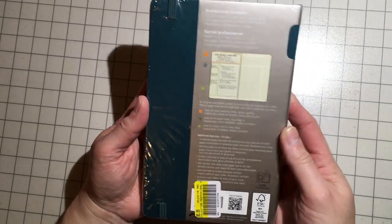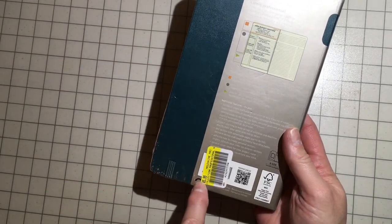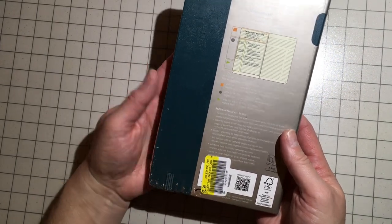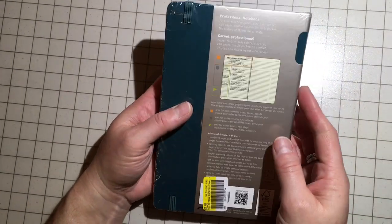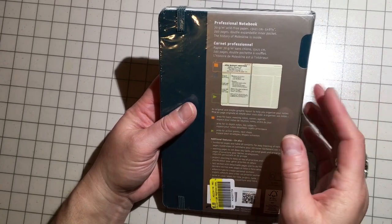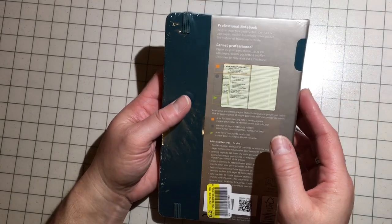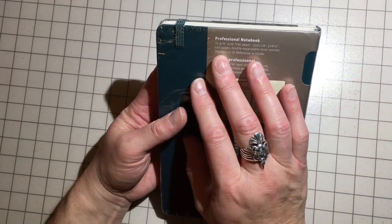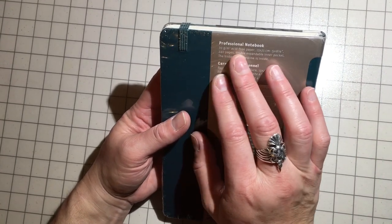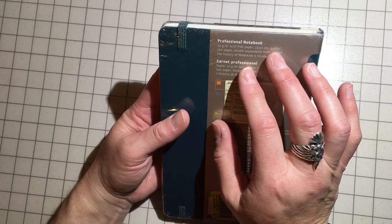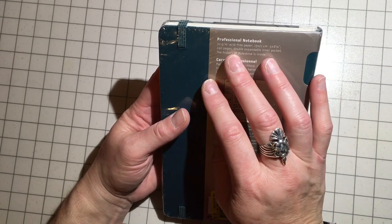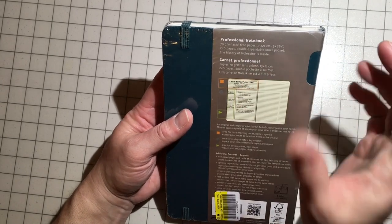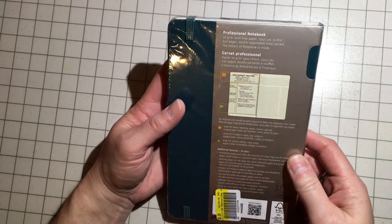It's their professional series. I picked this up, it says five ninety-nine, but I actually paid half price for that. I got it for three dollars, which is an amazing deal, because these run about twenty-five dollars, I think, out of Barnes & Noble and online. But it's 70 GM acid-free paper, 13 by 21, which is a 5 by 8 and a quarter, 240 pages.